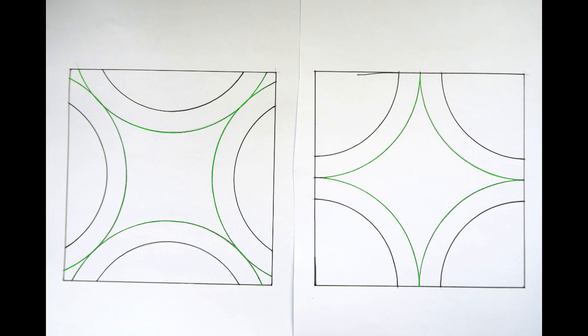How to fold it? The curved green lines are mountain folds, the other curved lines will be valley folds.